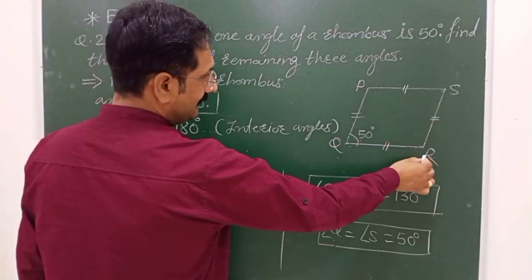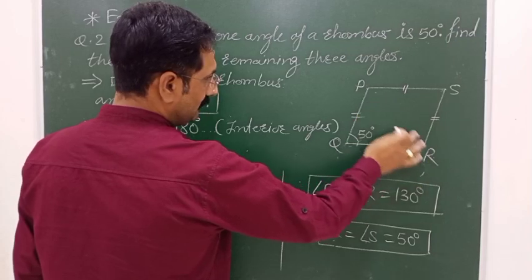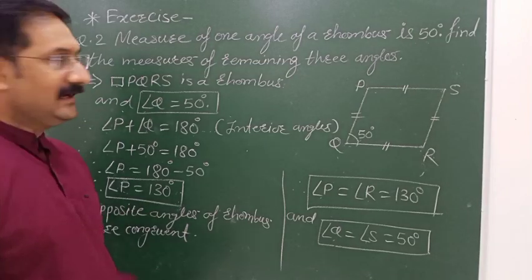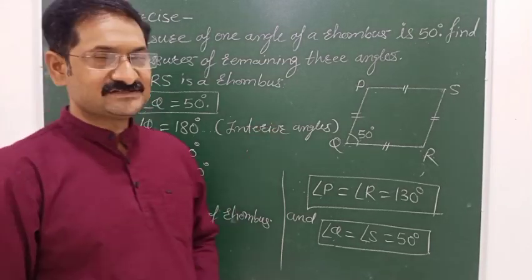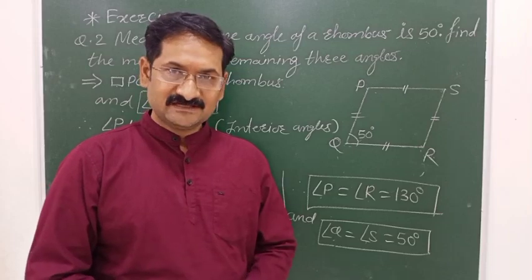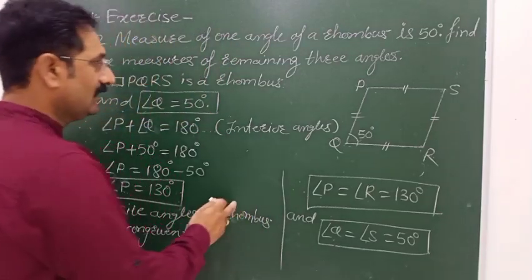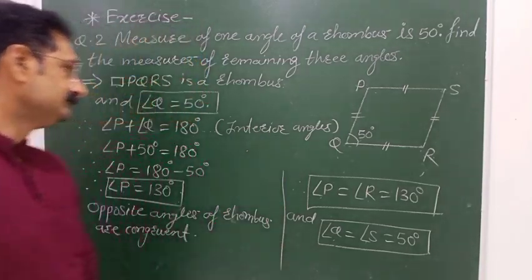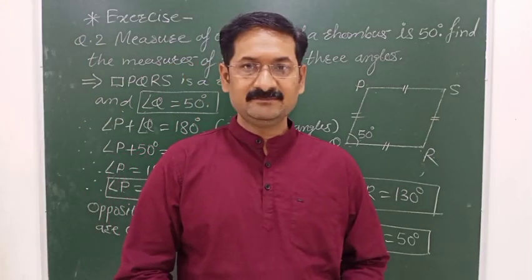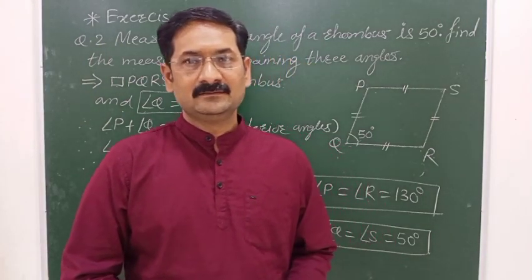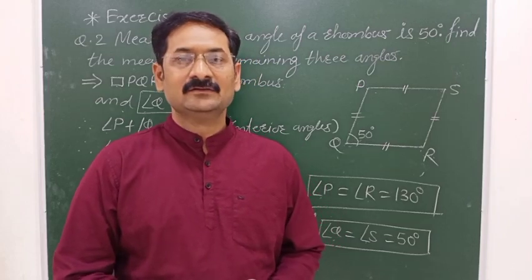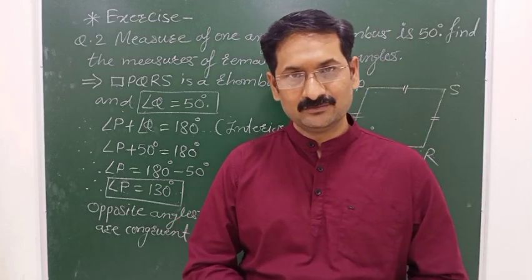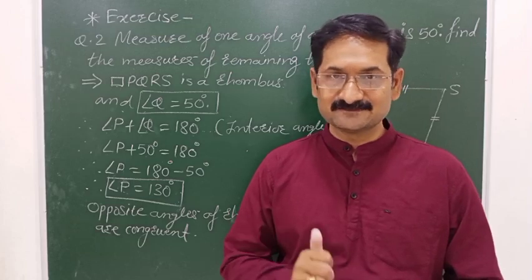So we have found the measures of all angles: angle P and angle R are 130 degrees, and angle S is 50 degrees. This completes Activity 27. Please like, comment, share, and subscribe to our channel.